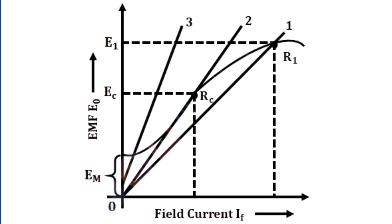Critical field resistance represents a pivotal threshold in the operation of a DC shunt generator. It is defined as the maximum field resistance value that still allows the generator to build up voltage when operating at its rated speed. In simpler words, if the resistance in the shunt field circuit exceeds this critical value, the generator will fail to generate the required voltage. To understand why this happens, we need to consider the relationship between field current, magnetic field strength and induced voltage.